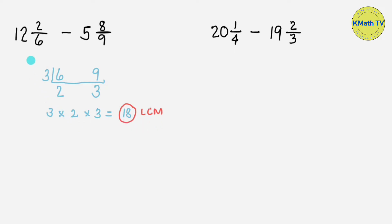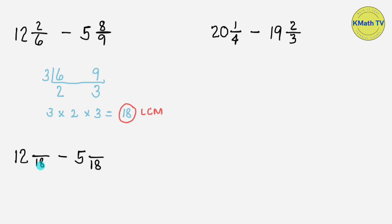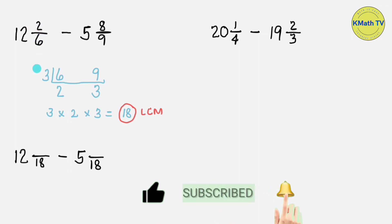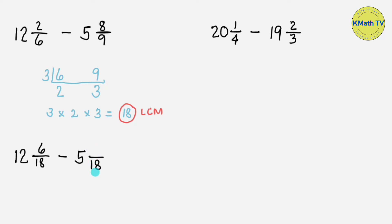Let's write the answer. Copy the whole number 12, and write the LCD 18, minus the whole number 5 and the LCD 18. Next, let's find the equivalent fractions by getting the numerators. For the minuend, 18 divided by 6 equals 3, and 3 times 2 equals 6, so the numerator of the minuend is 6. Doing the same for the subtrahend, the fractions are now similar — they have the same denominators.